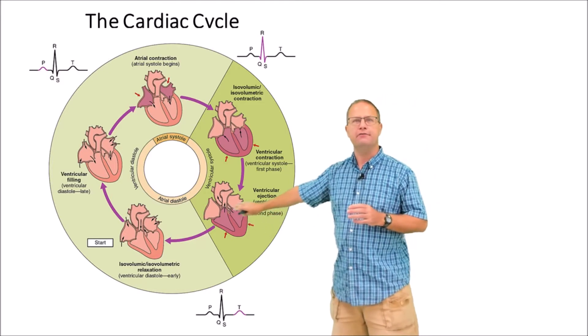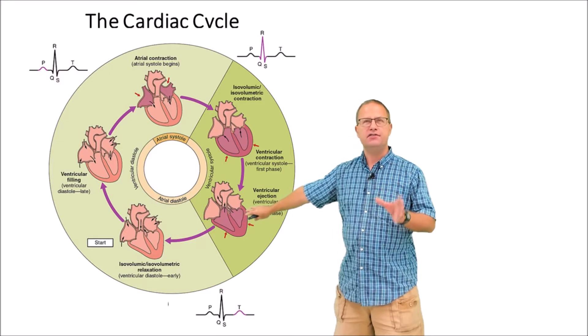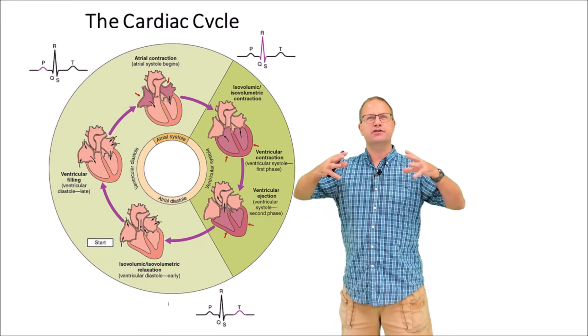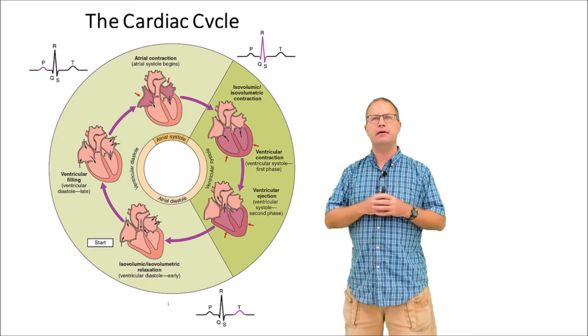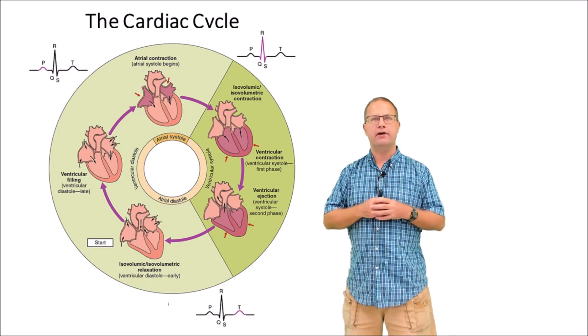Then we get to the actual period of ventricular ejection. This is the period in systole where the ventricles have contracted enough to generate enough pressure to open the semilunar valves and eject blood into the aorta and pulmonary trunk respectively.